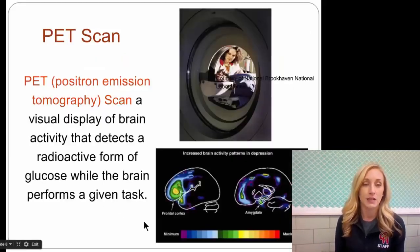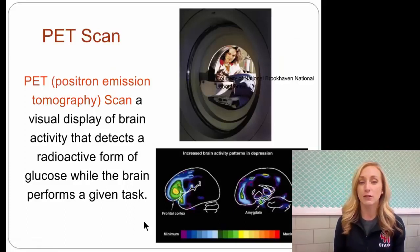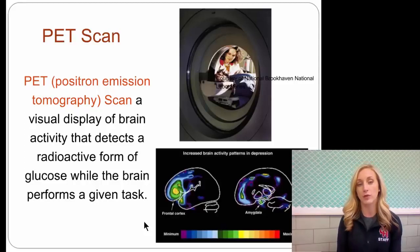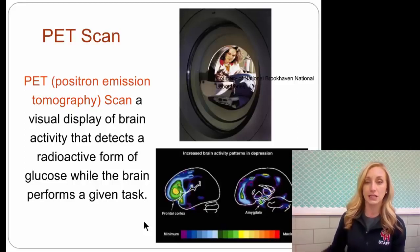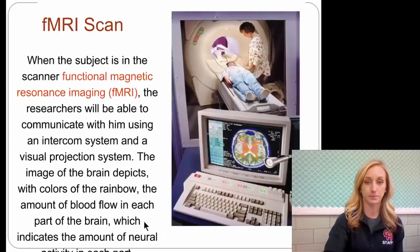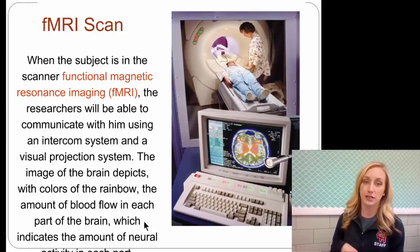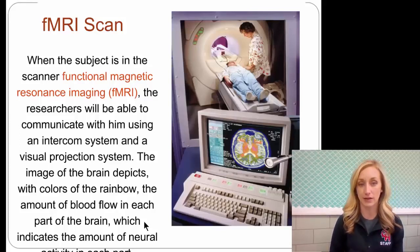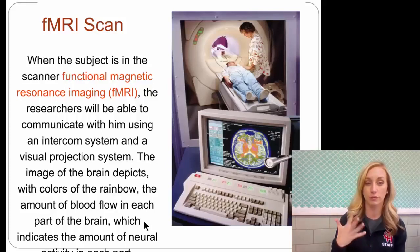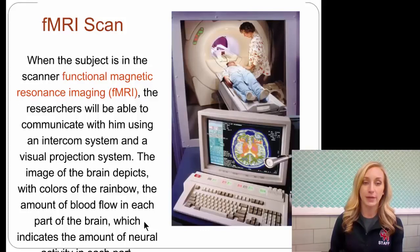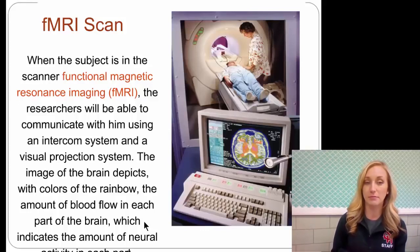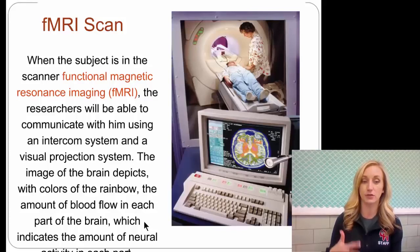A PET scan — positron emission tomography scan — is a visual display of brain activity that detects a radioactive form of glucose while the brain performs a given task. They actually inject the patient with this radioactive form of glucose, and then in this large machine your brain is in, they can see where the activity is and it will show brain activity. An fMRI is a functional MRI. The image of the brain depicts with colors of the rainbow the amount of blood flow in each part of the brain, which indicates the amount of neural activity.